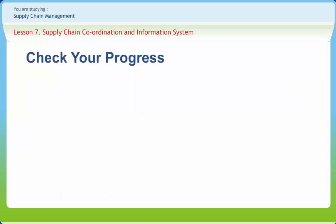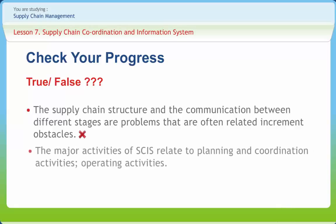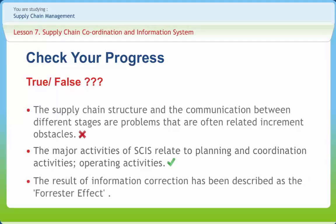Let us check our progress by stating if the statements are true or false. The supply chain structure and the communication between different stages are problems that are often related to incremental obstacles — true or false? False. The major activities of SCIS relate to planning and coordination activities and operating activities — true or false? True. The result of information correction has been described as the Forrester effect — true or false? False.